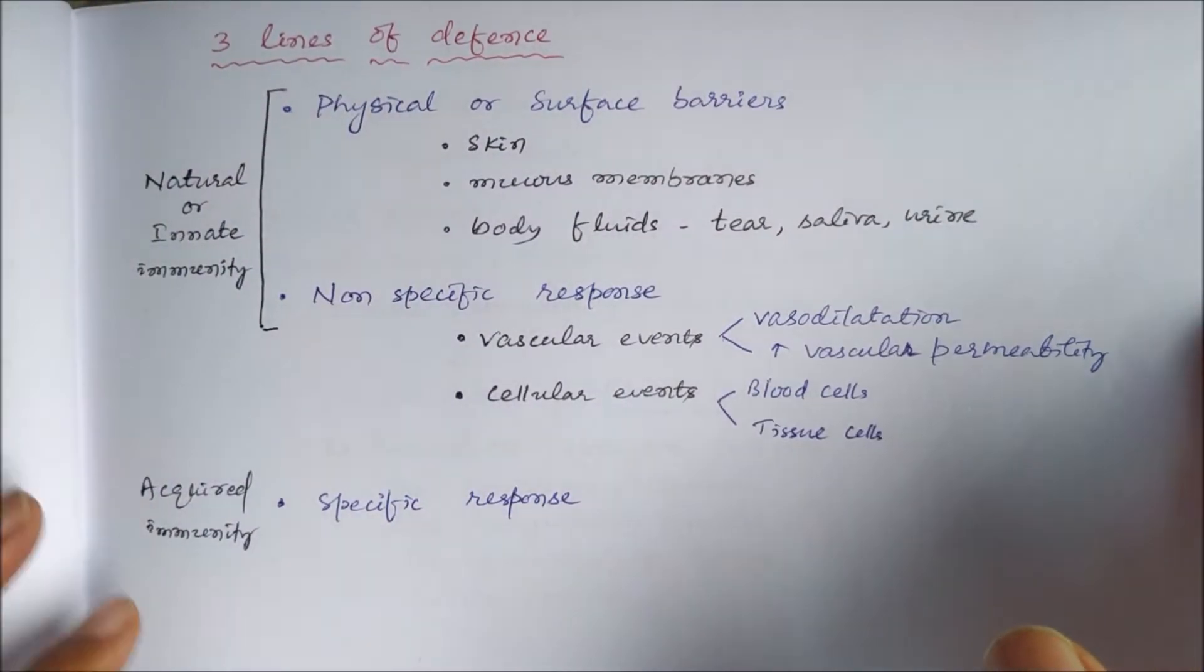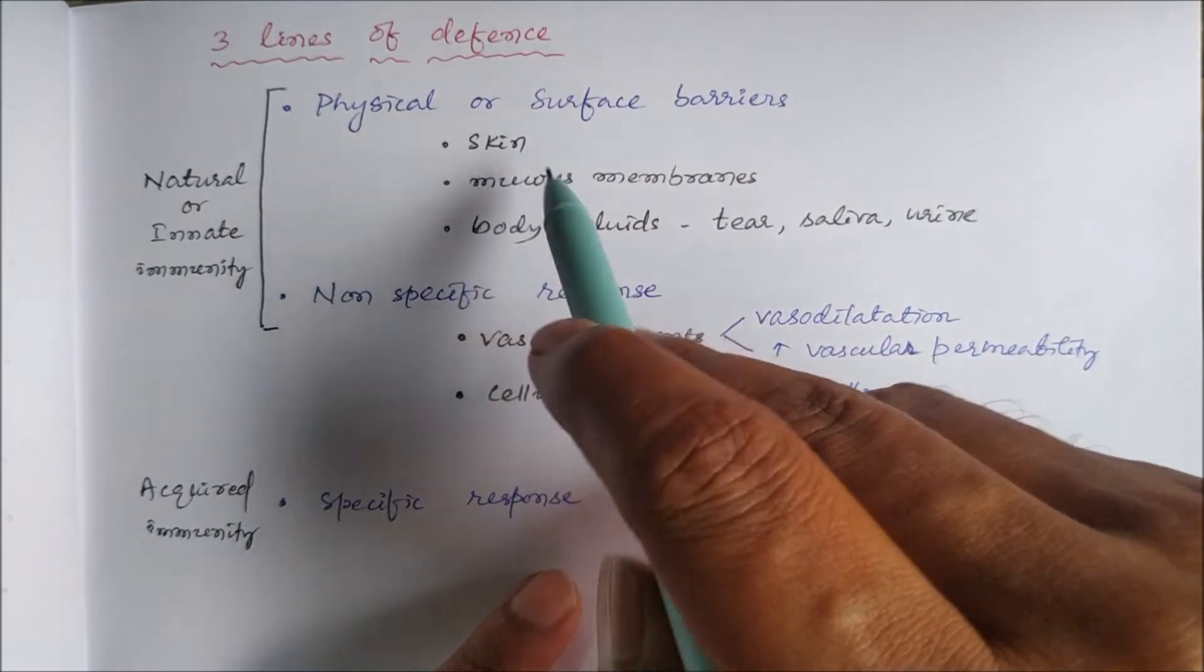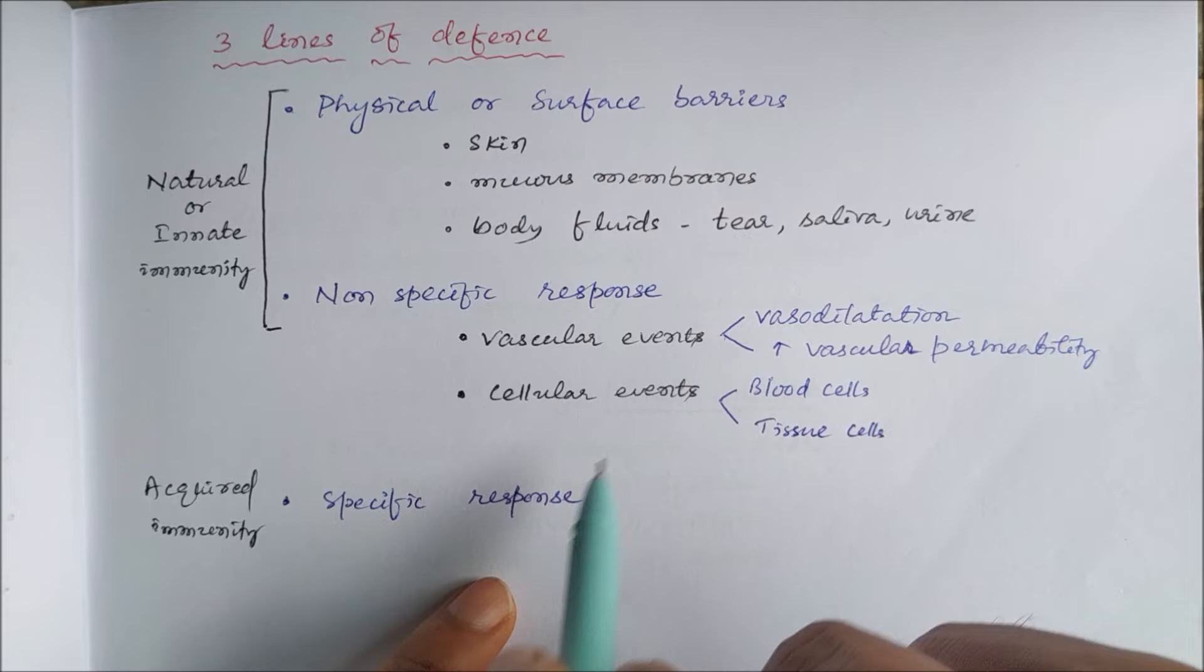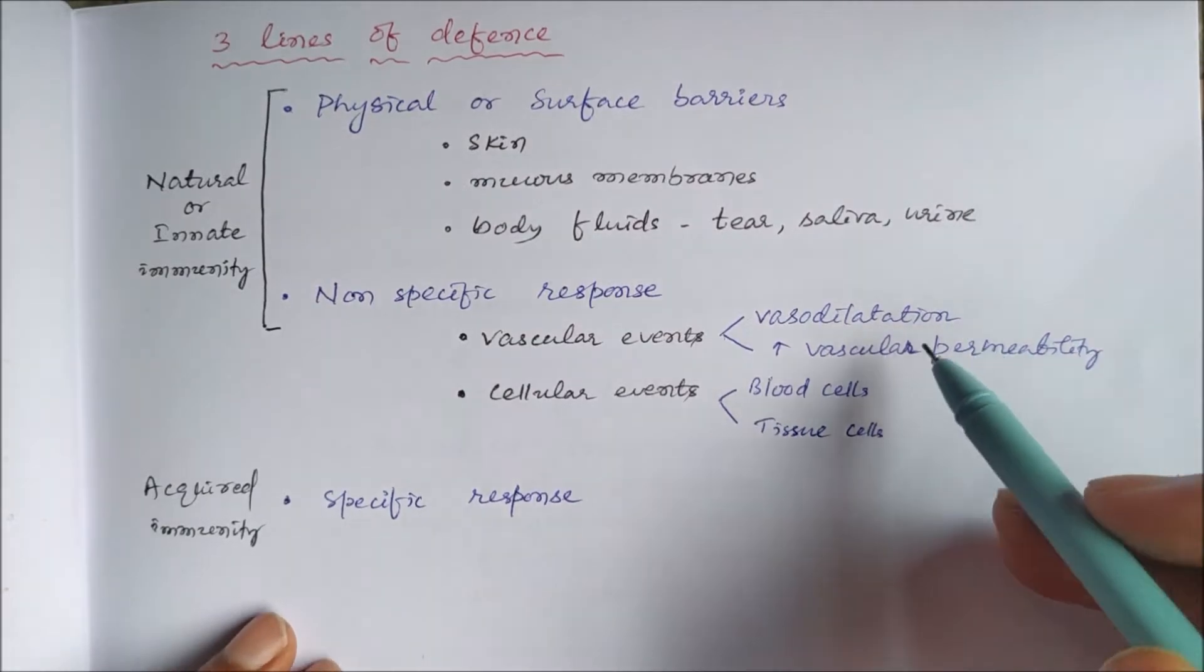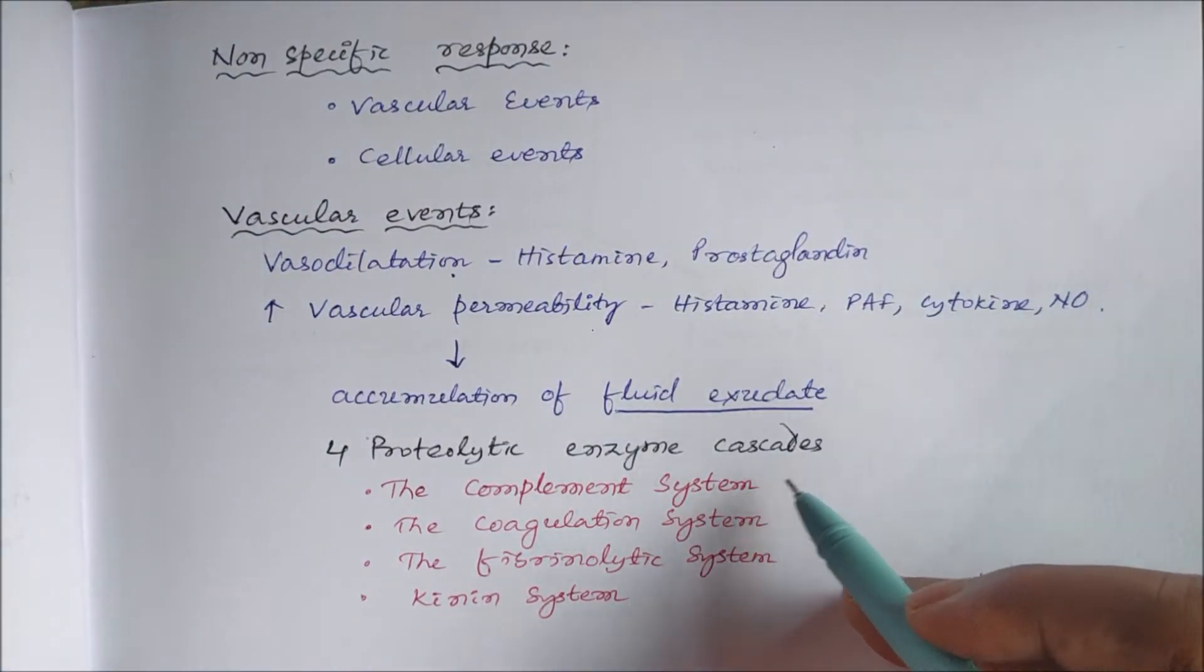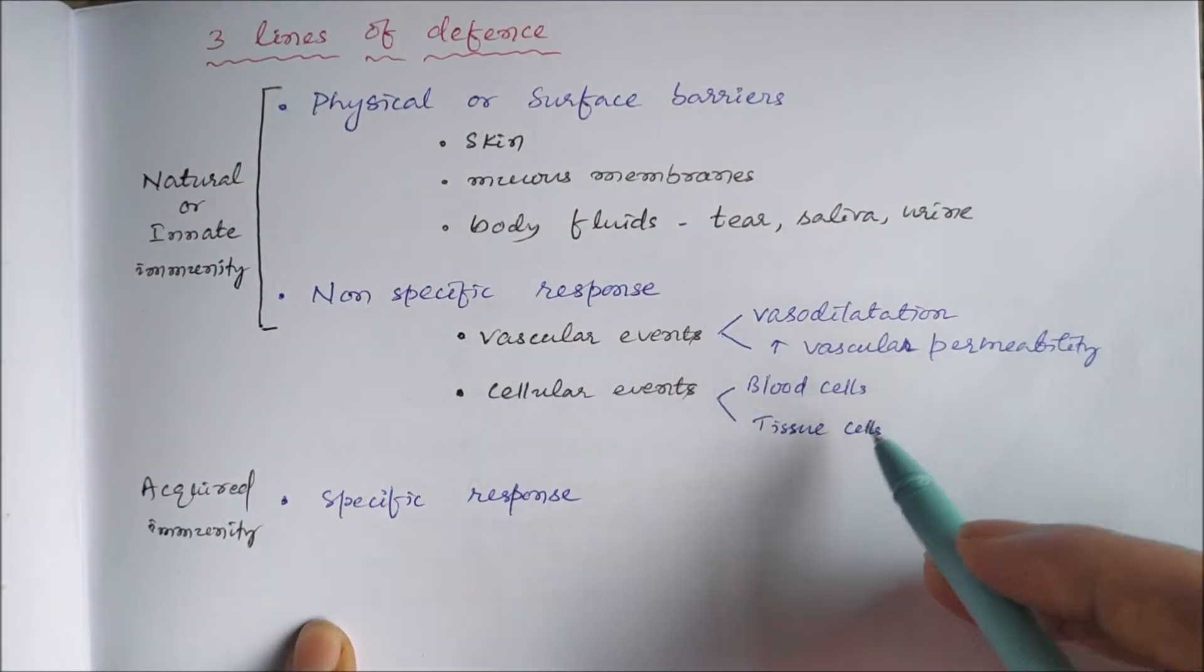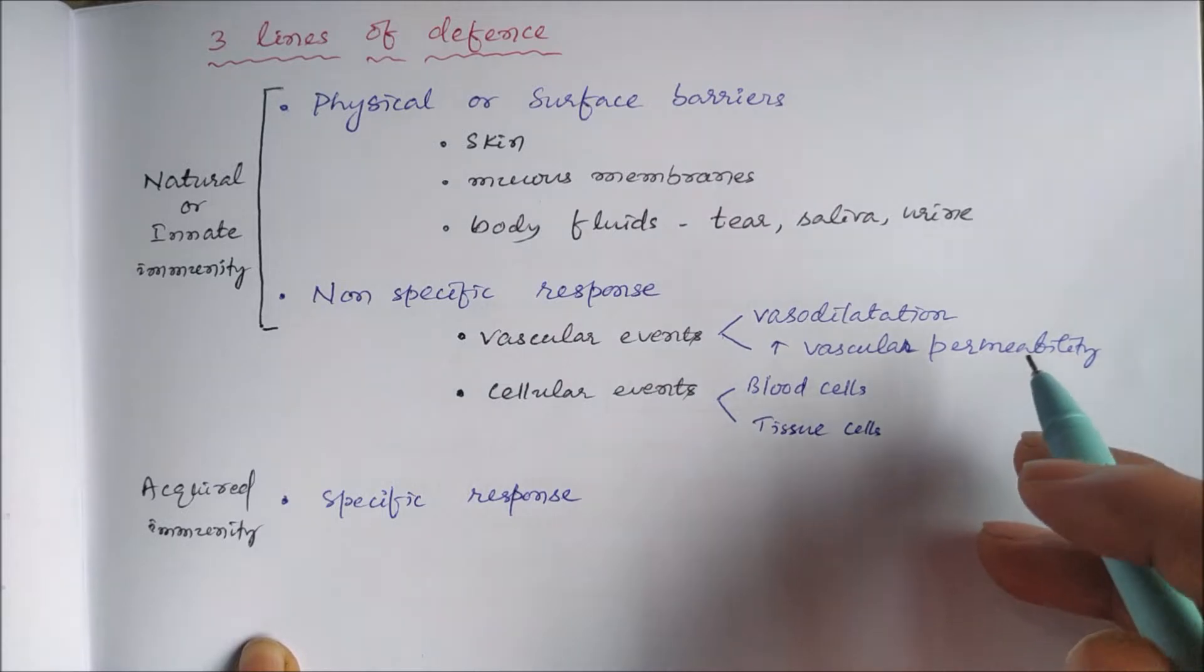There are three lines of defense. The physical or surface barrier is the first line. The second line is the non-specific response through vascular events and cellular events. Vascular events include vasodilation and increased vascular permeability, with involvement of four proteolytic enzyme cascades including the complement system.